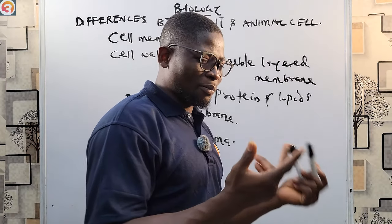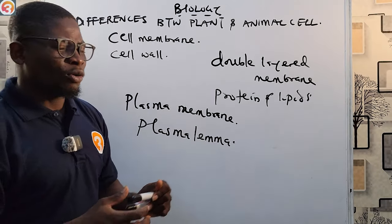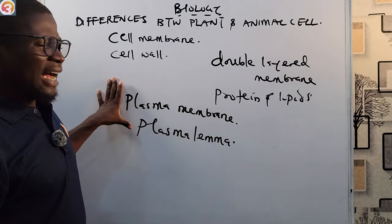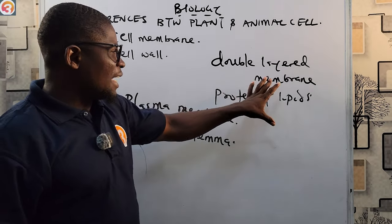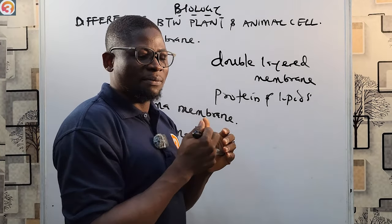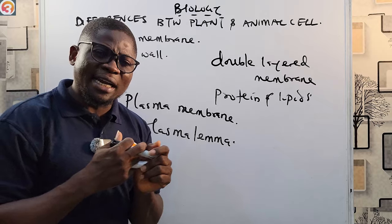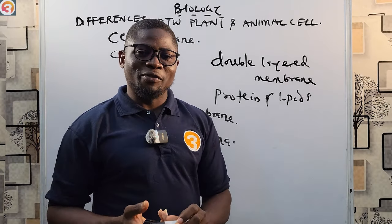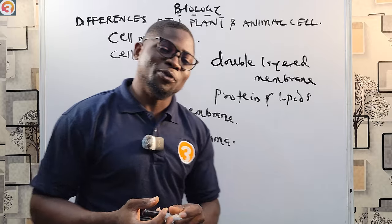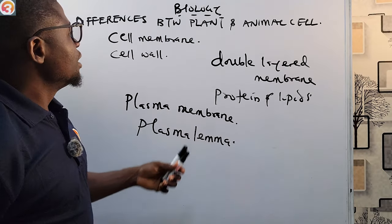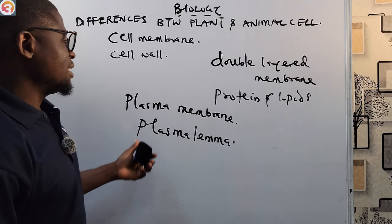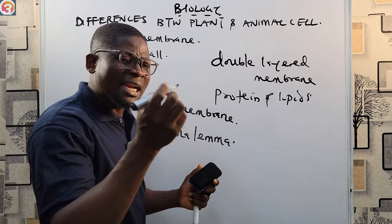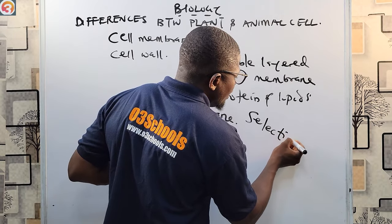The cytoplasm is a gelatinous liquid containing many substances — water, fats, carbohydrates, and many others. The cell membrane is a double-layered membrane of proteins and lipids that surrounds the cell and separates the cytoplasm from its surroundings. It is also called the plasma membrane or plasma lemma, and very importantly, it is selectively permeable.